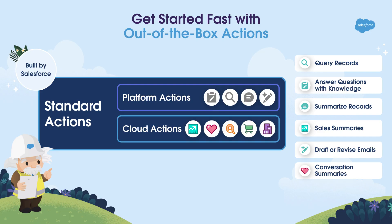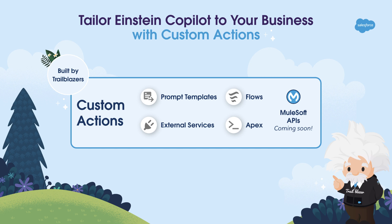Einstein Copilot comes pre-built with a library of standard actions. These actions can be used to find records, summarize them, draft sales emails, aggregate data and give you that aggregation number, and more. You can also enhance these Copilot capabilities by creating your own custom actions using Apex, Flows, or Prompt templates. We'll deep dive into custom actions in another video, but for now, let's explore some of these standard actions.